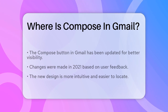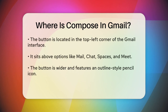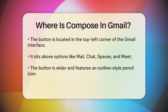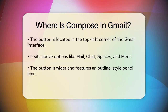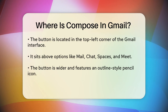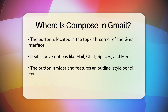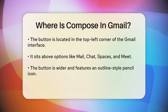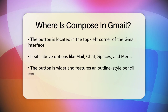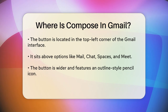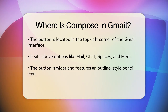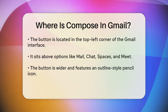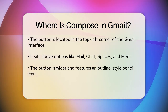When you log into your Gmail account, look to the top left corner of your screen. You'll see a static strip with options like Mail, Chat, Spaces, and Meet. The Compose button is now prominently displayed in this top left corner, above these other options.